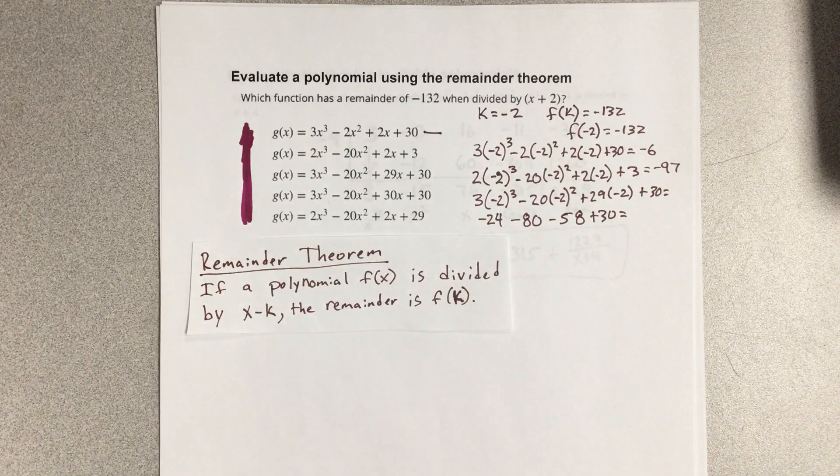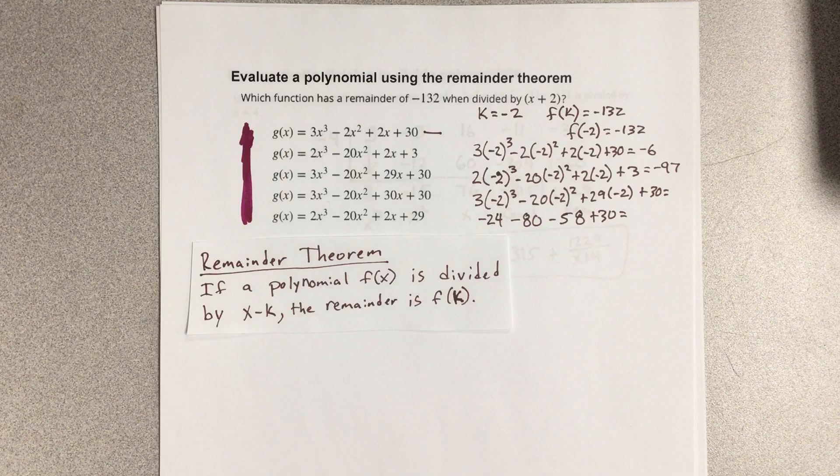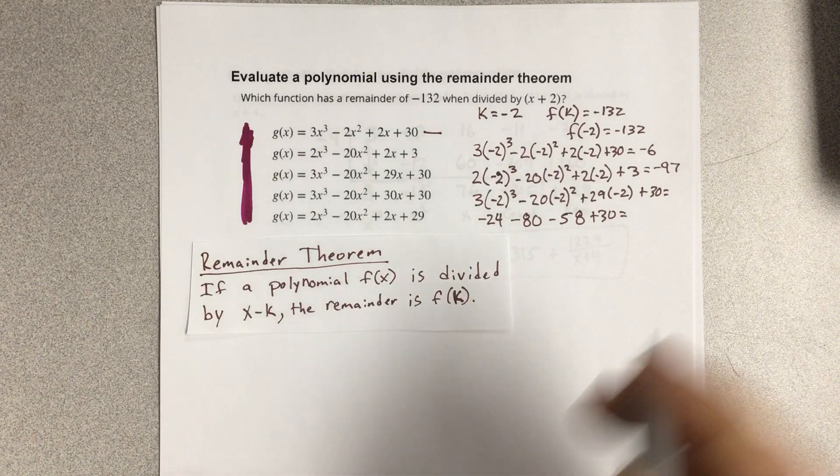If I put all those together negative 24 minus 80 minus 58 plus 30 I get negative 132.